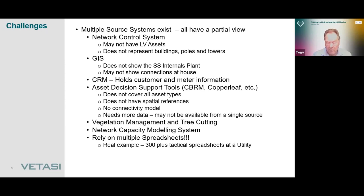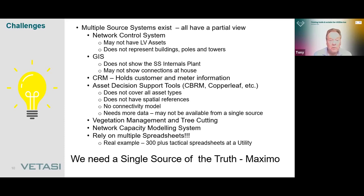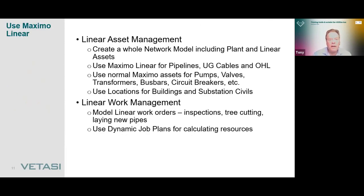So what's the bright idea? We need a single source of truth, and we believe that Maximo can be that single source of truth — it doesn't eliminate the other systems, it works in conjunction with them and adds to them. The solution is linear asset management. With it, you can create an entire network model including plant and linear assets: use Maximo linear functionality for pipelines, underground cables and overhead lines; use normal Maximo assets for pumps, valves, transformers, circuit breakers, bus bars, etc.